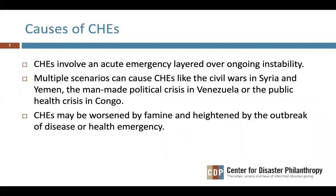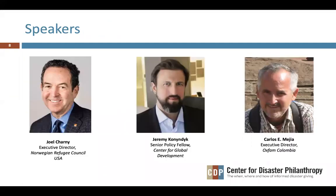In thinking about the causes of complex humanitarian emergencies, they involve an acute emergency layered over ongoing instability, with multiple scenarios that can cause them — like the civil wars in Syria and Yemen or the man-made political crisis in Venezuela. These emergencies may be worsened by famine and heightened by the outbreak of disease or a health emergency. We encourage you to read our Complex Humanitarian Emergencies Issue Insight for more.